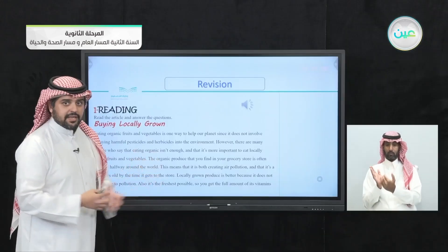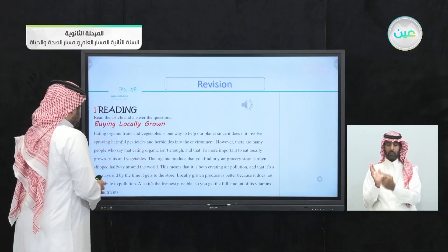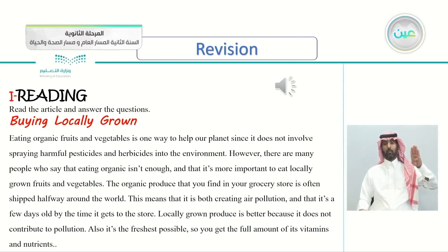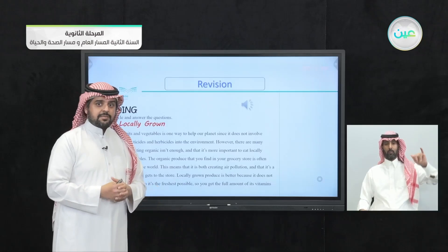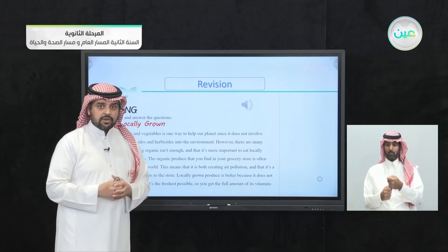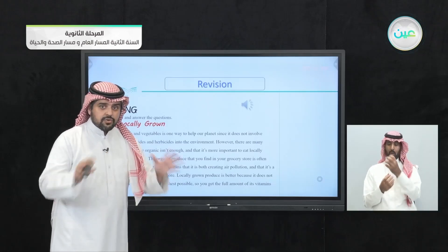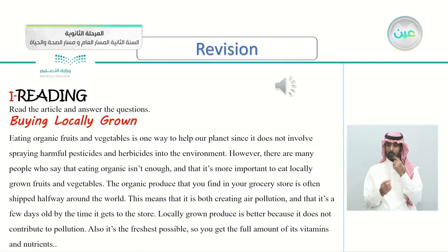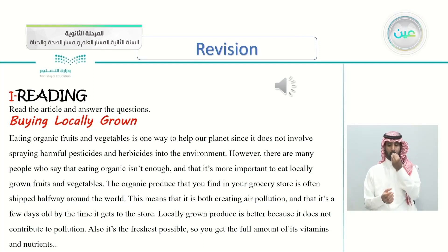The next exercise is I — reading. Read the article and answer the questions. We have a three-part article. The first part is 'Buying Locally Grown.' Locally grown means the vegetables that are grown in your local area.